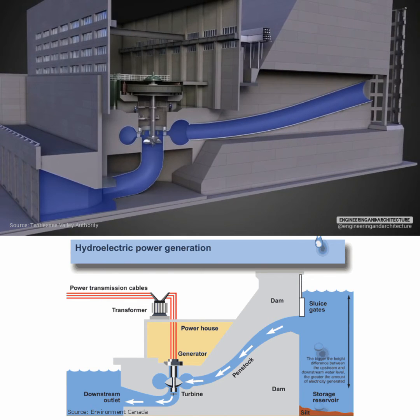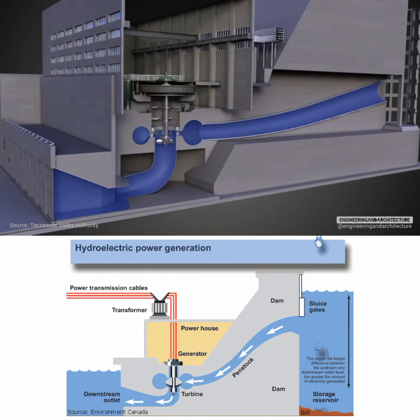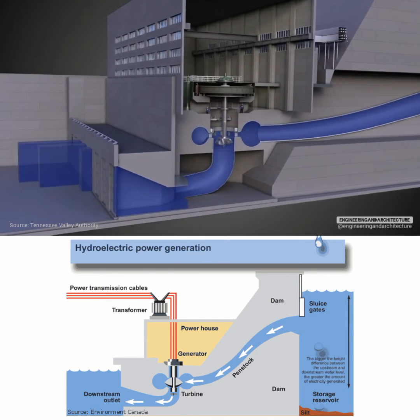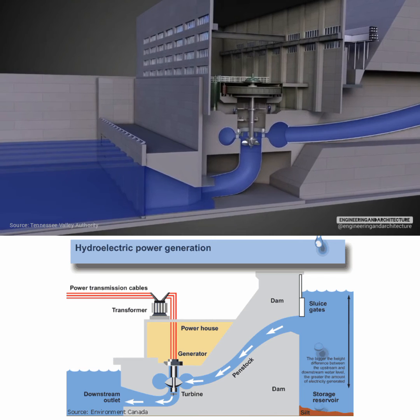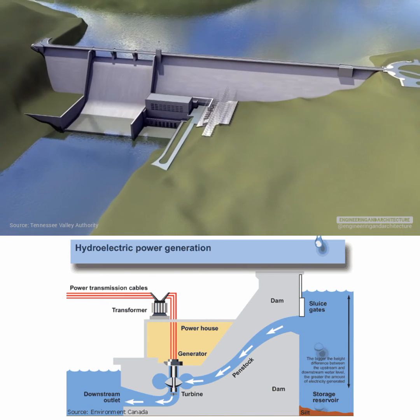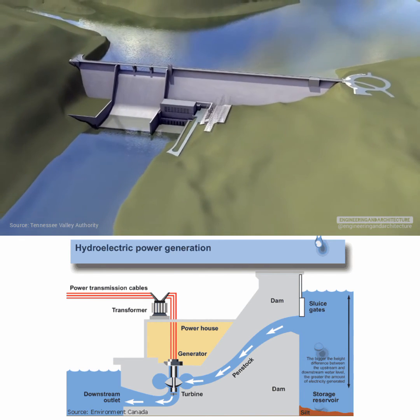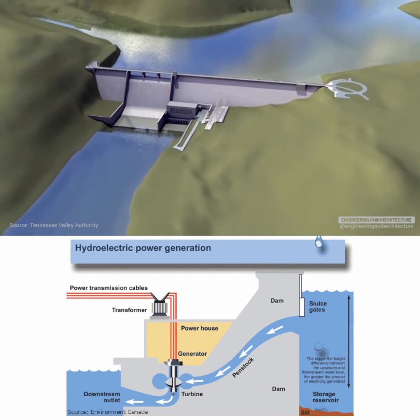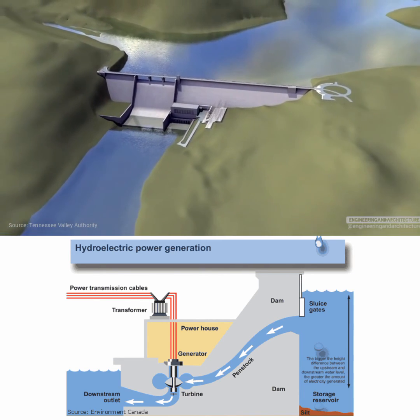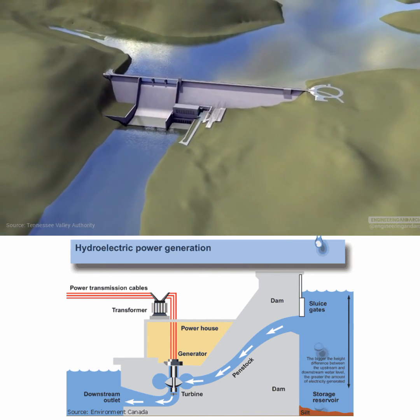After flowing through the penstock and across the turbine, the water continues into the river on the other side of the dam. Hydroelectric power is a renewable source of energy. It's also one of the most cost-reliable forms of electric production.